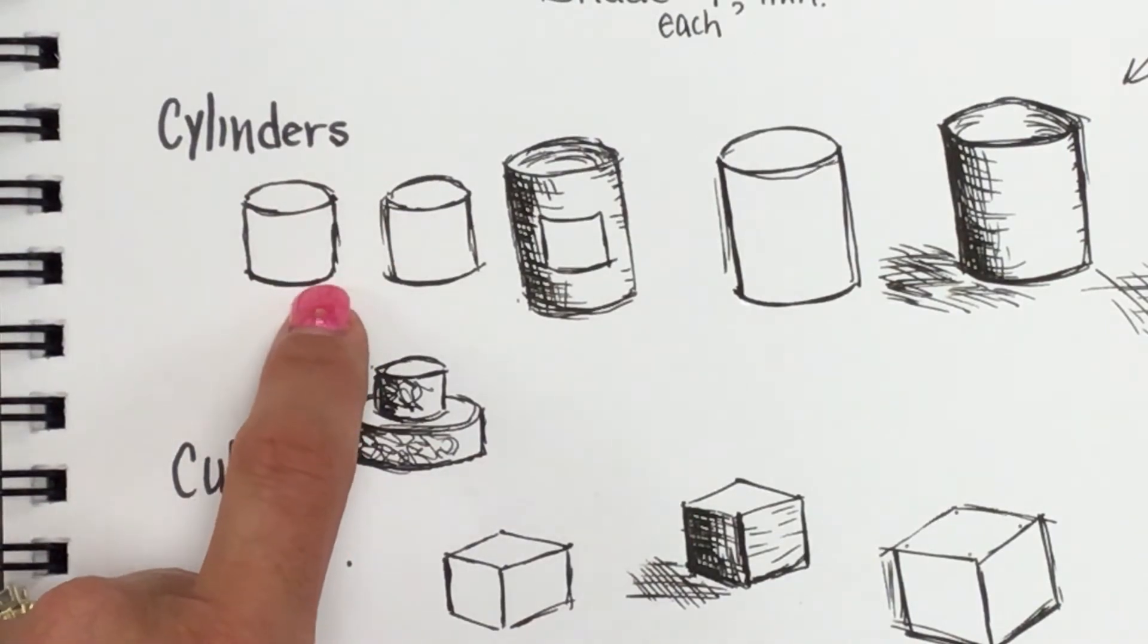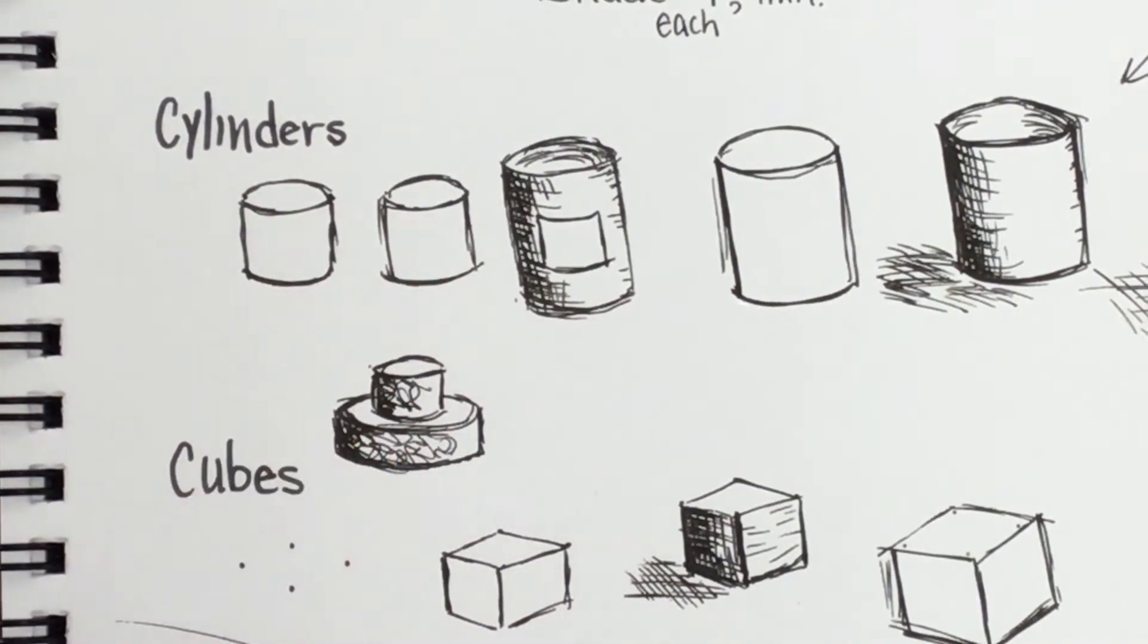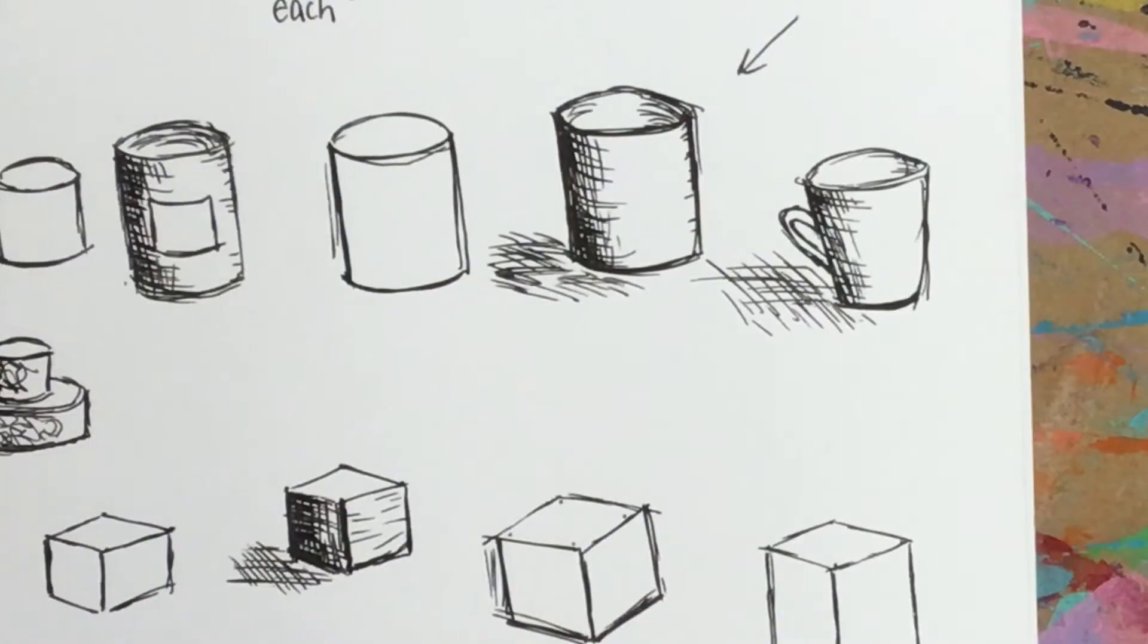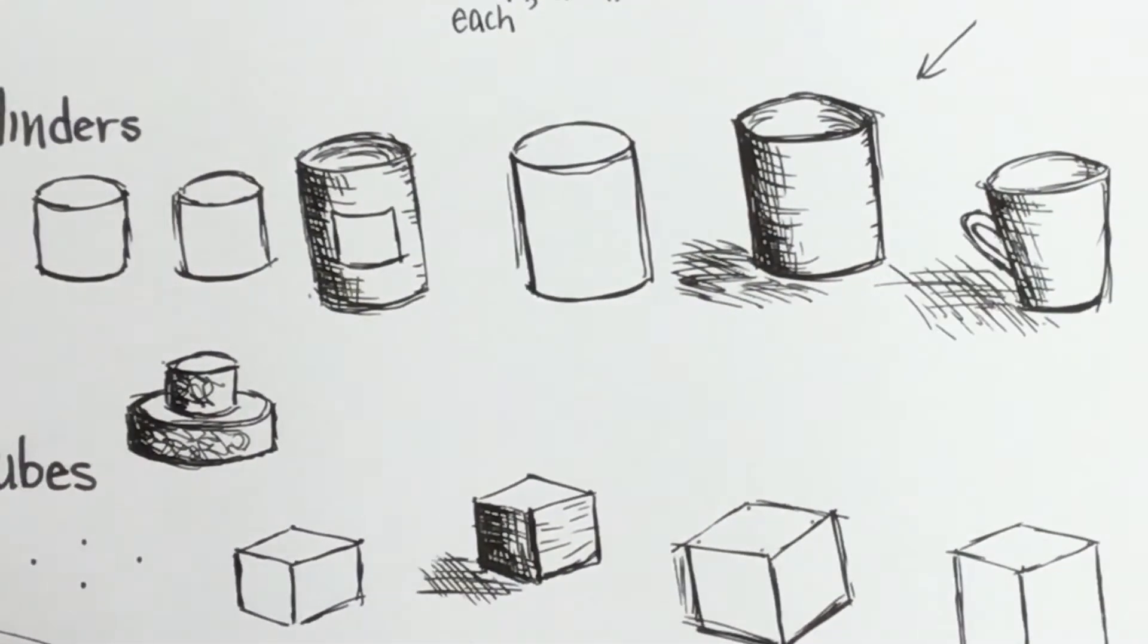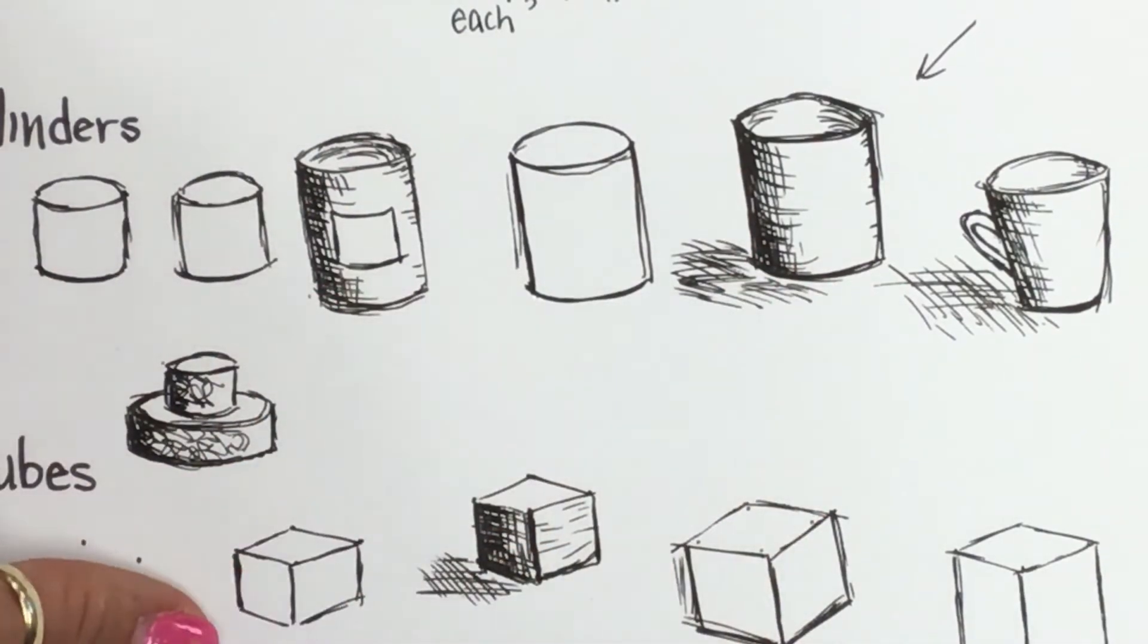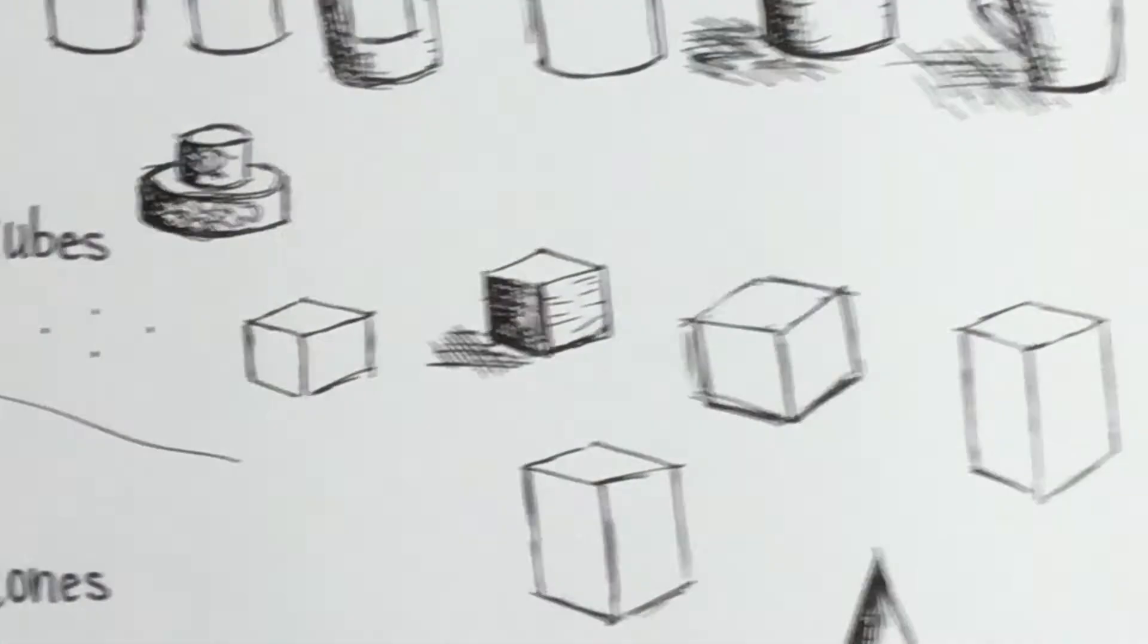Trying to keep those the same, the sides are parallel unless you're trying to draw like a coffee mug or something like that, they're going to come in a little bit obviously. But keeping those kind of the same and then using some type of shade.